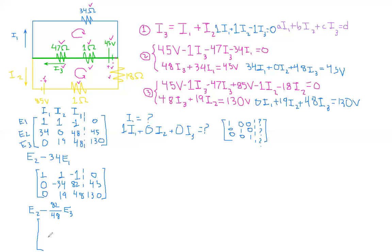Again, row one stays the same. And now row two, we have zero minus blah times zero, which is just zero. And then we have negative 34 minus this times 19, which is negative 66.5. 82 minus 82 is zero. And then 45 minus this times 130 is negative 177 approximately. The actual decimals are super ugly, but you know, rounding.